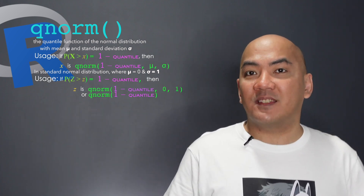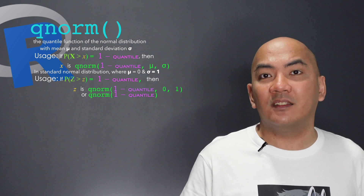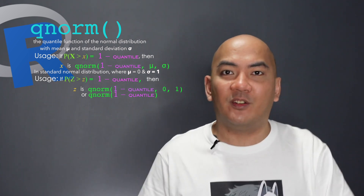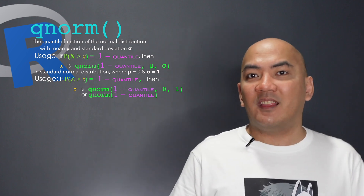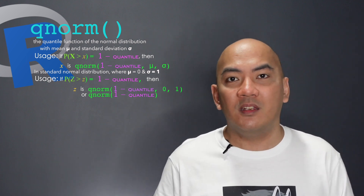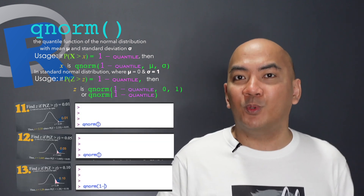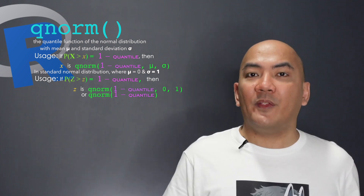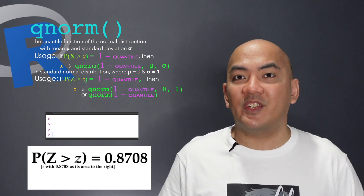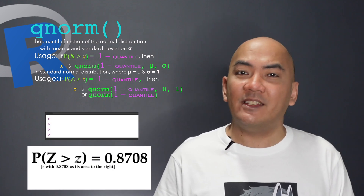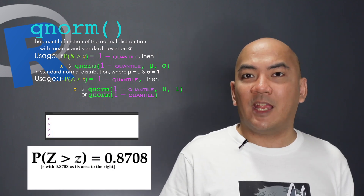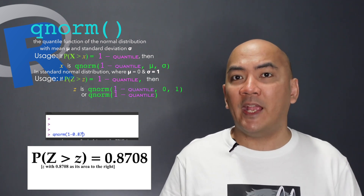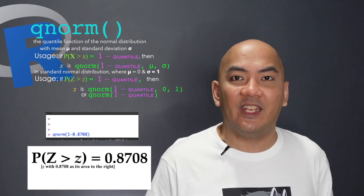And if you're asked to find the value of Z given its area to the right, find first its cumulative probability by subtracting that given area from 1, and then use that as the value inside the qnorm function. So if the area to the right is 0.8708, just type qnorm(1 - 0.8708).